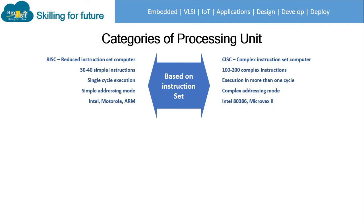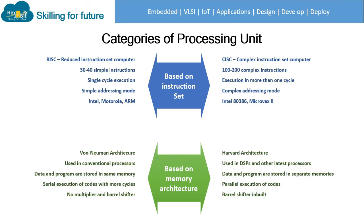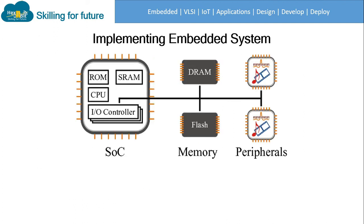Based on memory architecture, there are two types. Von Neumann architecture, used in conventional processors, stores data and program in the same memory with serial execution of code over more cycles, with no multiplier and using a barrel shifter to enhance speed. Harvard architecture, used in DSPs and modern processors, stores data and program in separate memories, supports parallel execution of code, and has an inbuilt barrel shifter to shift bulk data quickly, enhancing processor speed.